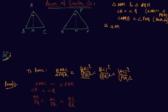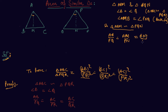Since two angles are equal, the third angle will always be equal. So triangle ABM is similar to triangle PQN. If these two triangles are similar, I can state that AB to PQ is equal to AM to PN, or BM to QN.